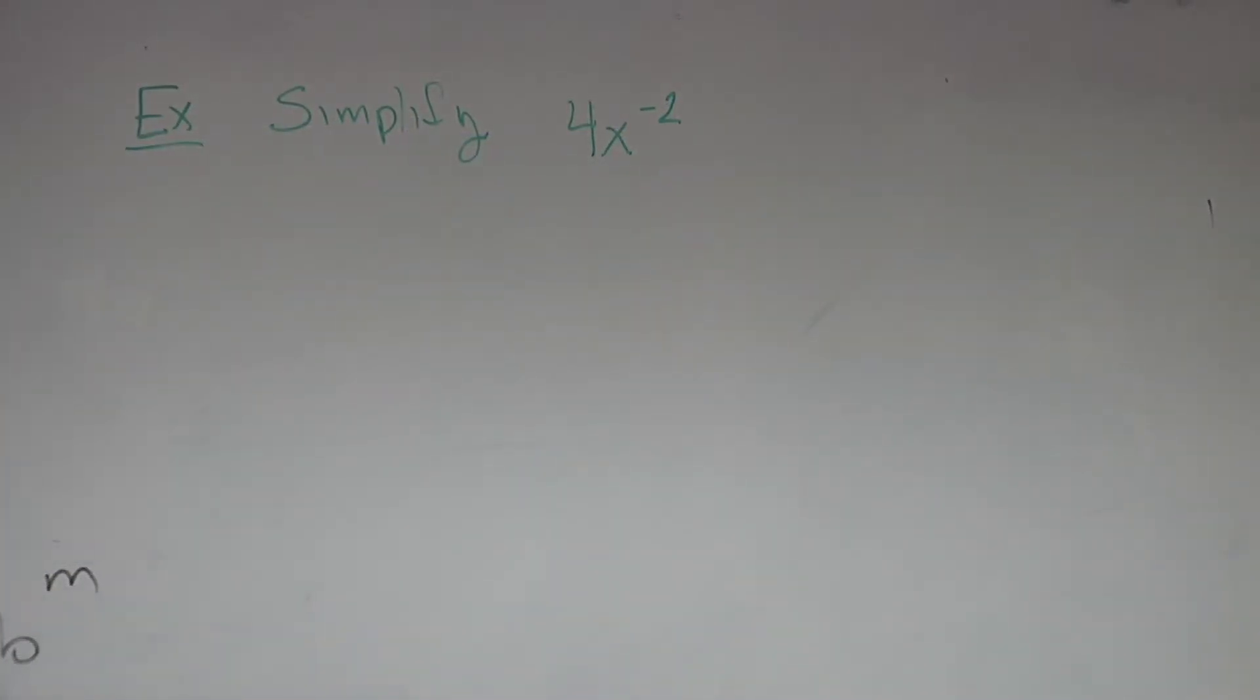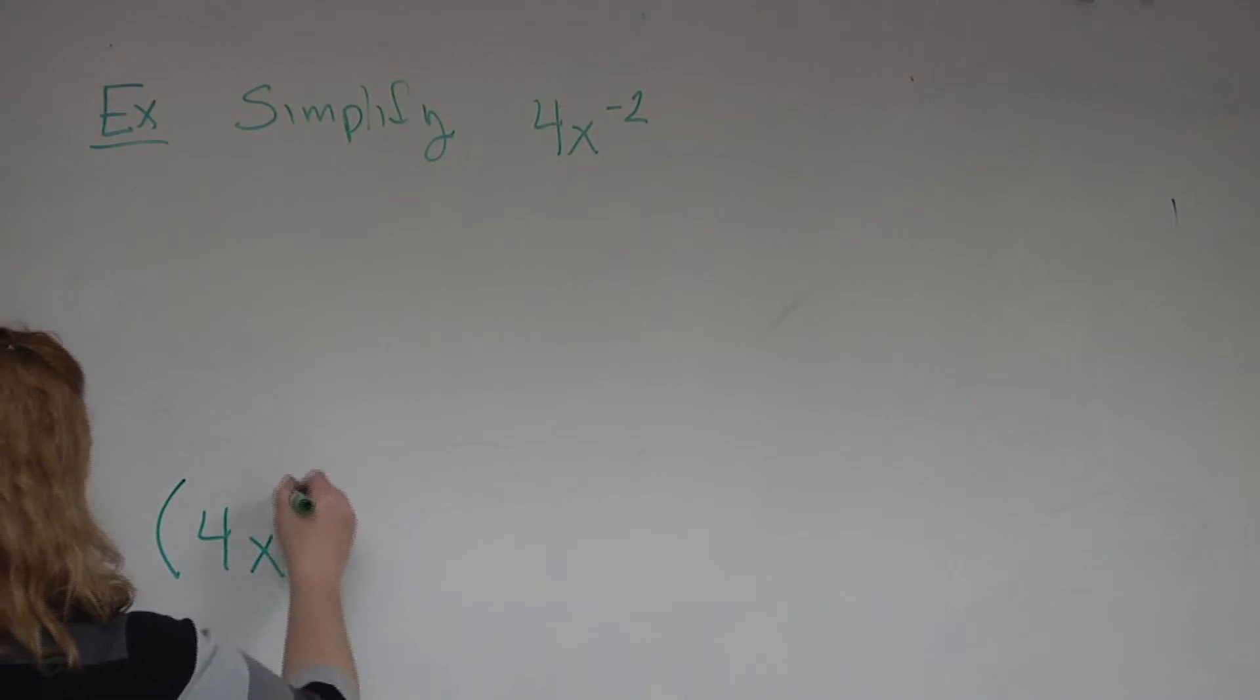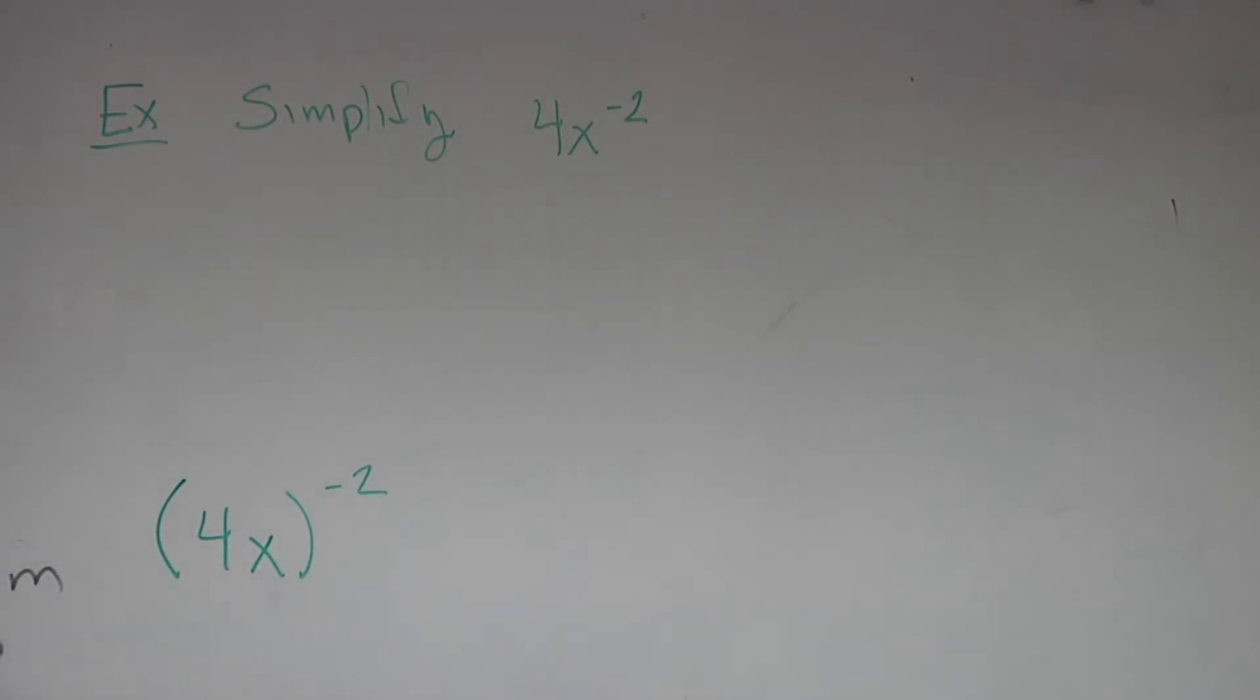4x to the negative 2. Do you see a parenthesis? No. So since you don't see a parenthesis, that power negative 2 is attached onto what? Remember, what makes this problem different from this one? What's the difference between the two problems? It's the whole thing. Exactly. This denominator here, and every time you see a power, you look at the first thing to the left.